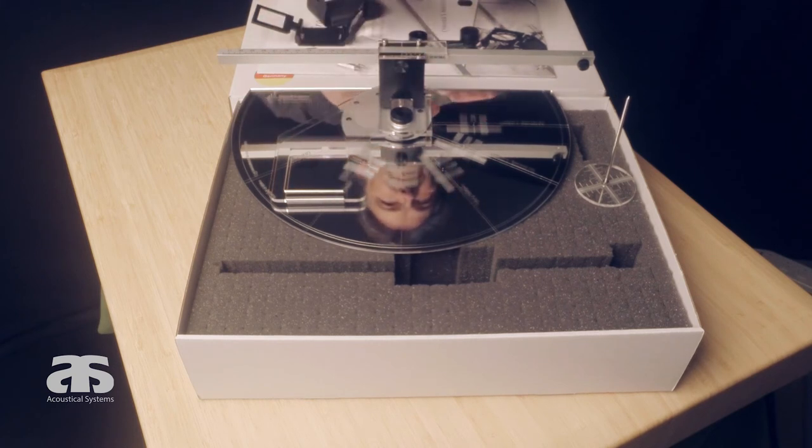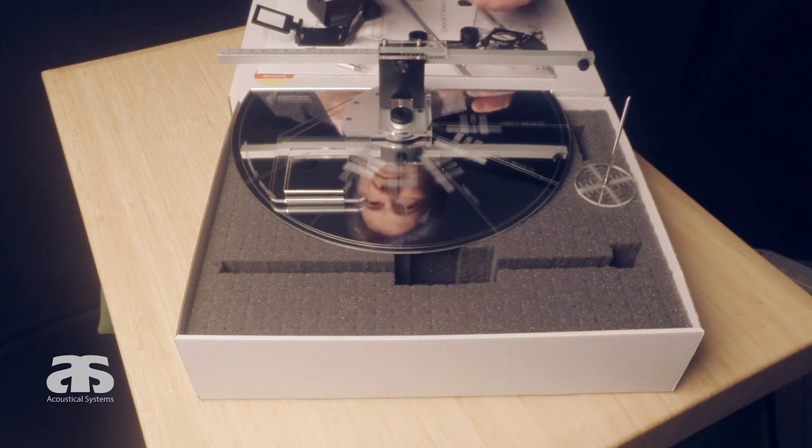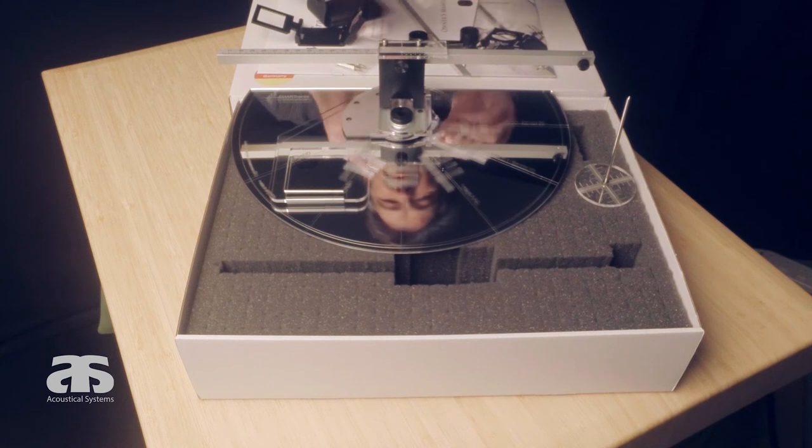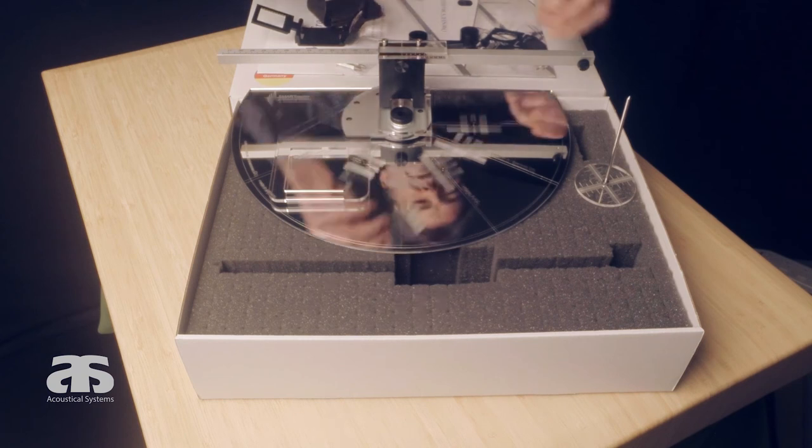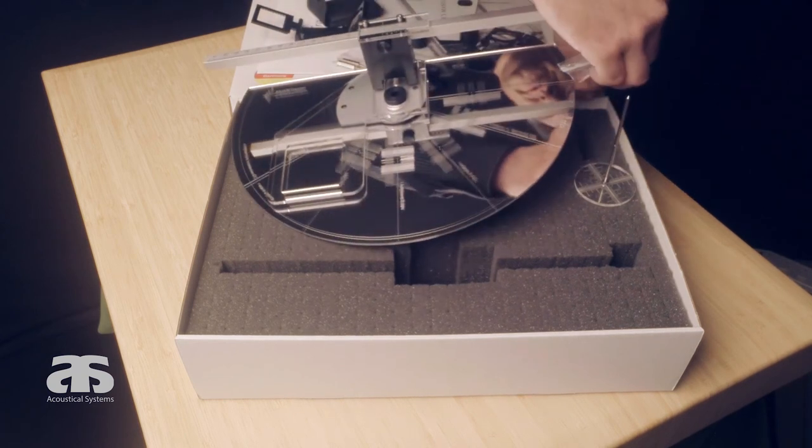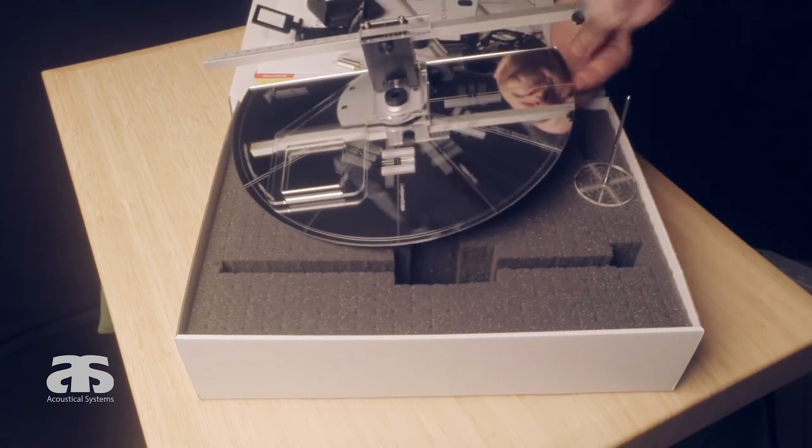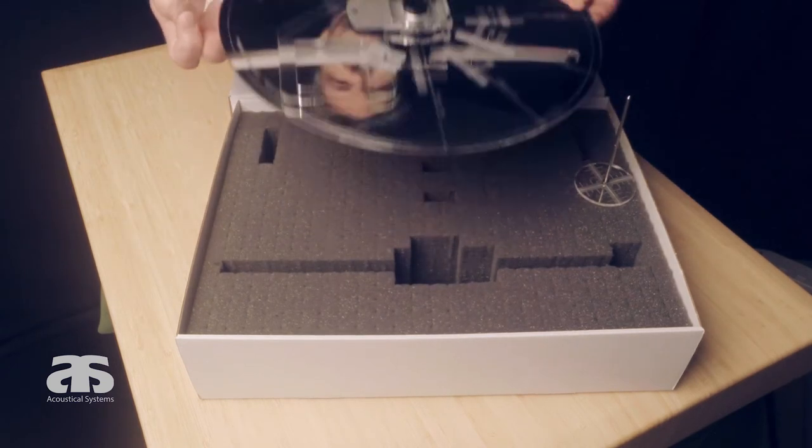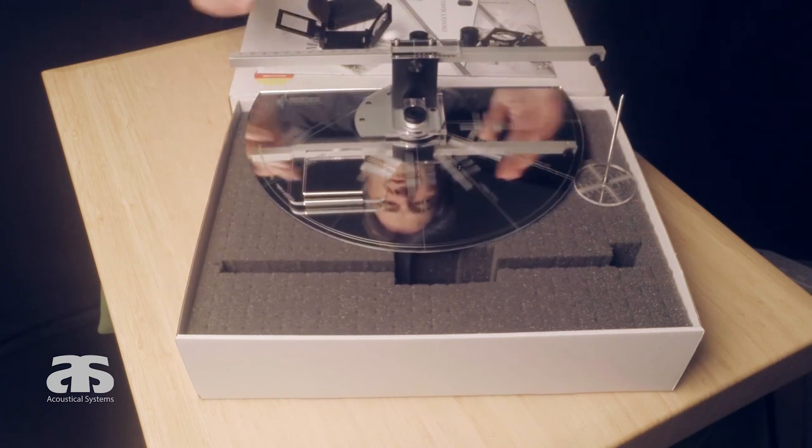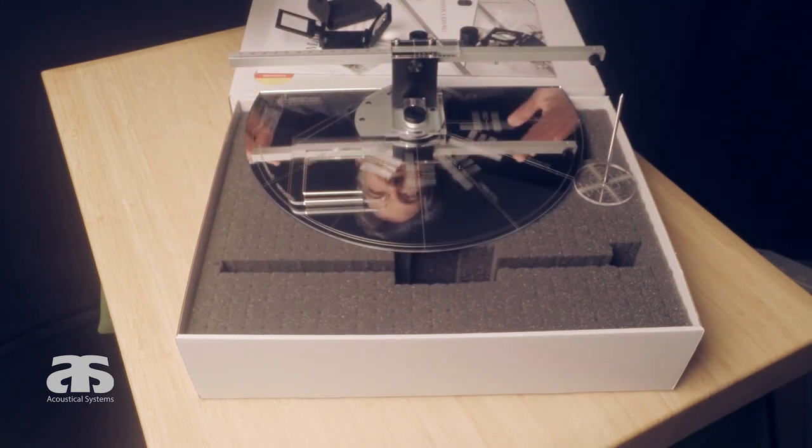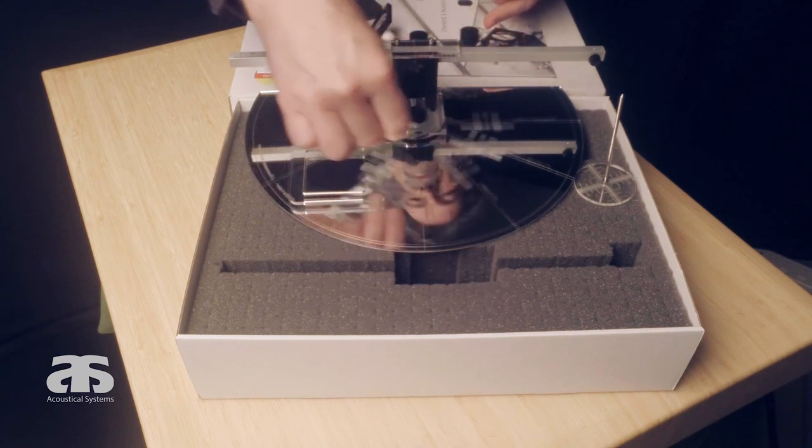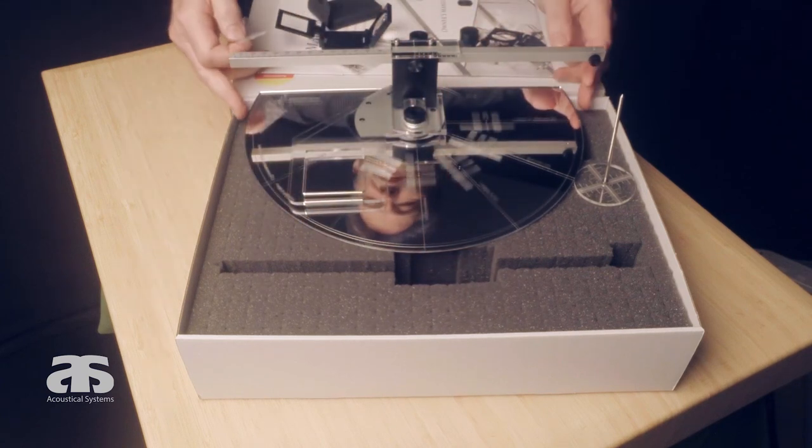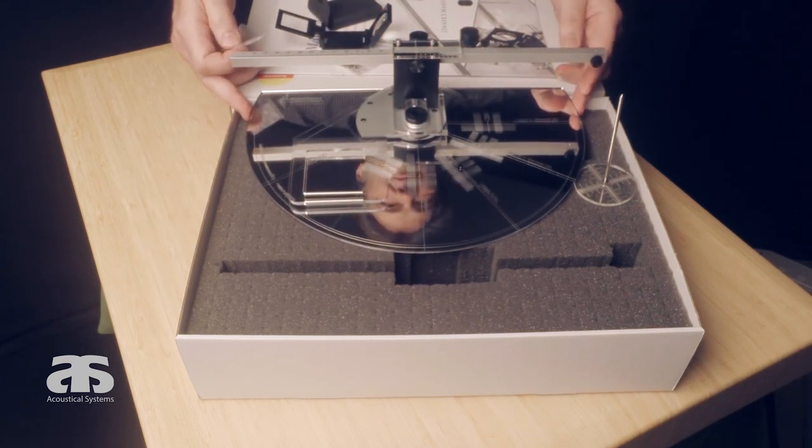Furthermore, for turntables with an indented, means slightly convex or concave, platter surface, you have six small rubber surface headers. And you can either put them underneath in three points to lift the outer side to accommodate a platter where the center is slightly higher than the outer rim, or you put three around the center to accommodate a platter where the indention is in the opposite direction.